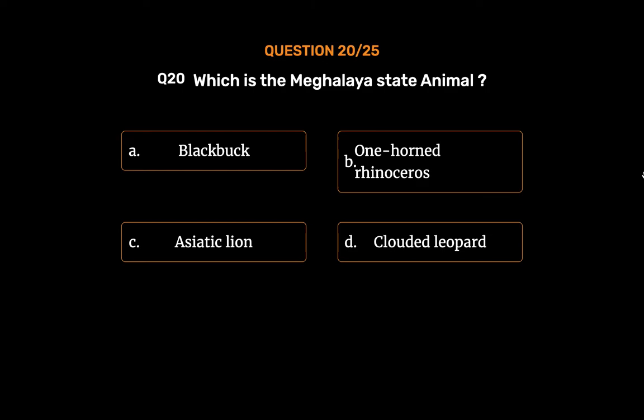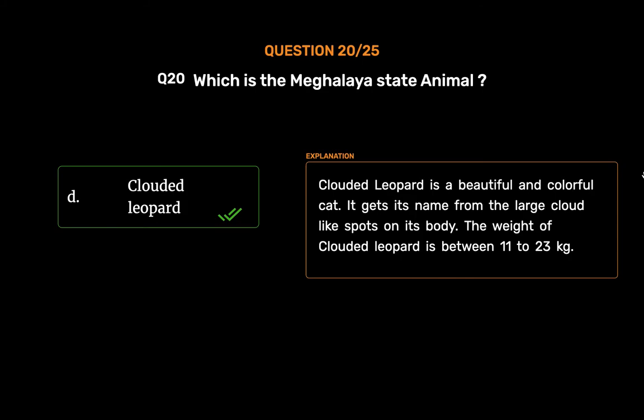The correct answer is Option D: Clouded Leopard. The Clouded Leopard is a beautiful and colorful cat. It gets its name from the large cloud-like spots on its body. The weight of the Clouded Leopard is between 11 to 23 kilograms.